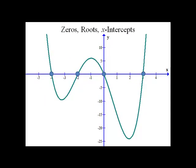Now, let's write these up as pairs. Because the y-coordinate in all of them is zero, for instance at negative four it would be negative four, zero. Then we'd have negative two, zero; zero, zero; and three, zero. So that's how we could write x-intercepts as ordered pairs.